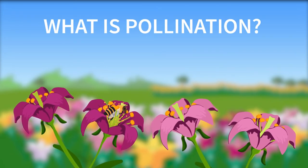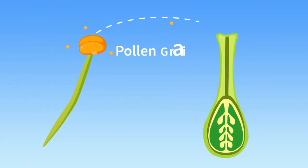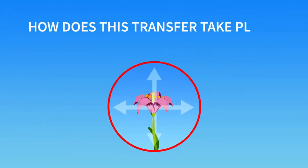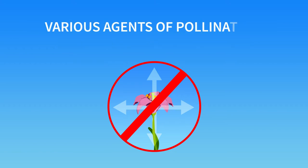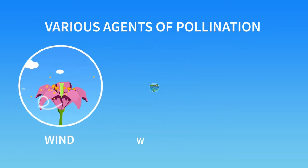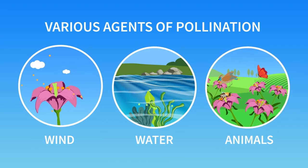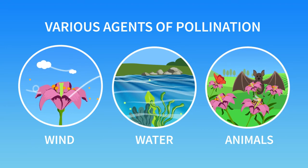But what is pollination? Pollination is the transfer of pollen grains from the stamen to the surface of the stigma. How does this transfer take place since plants cannot move? This happens by various means such as wind, water, birds, insects like bees and butterflies, and even mammals like bats.